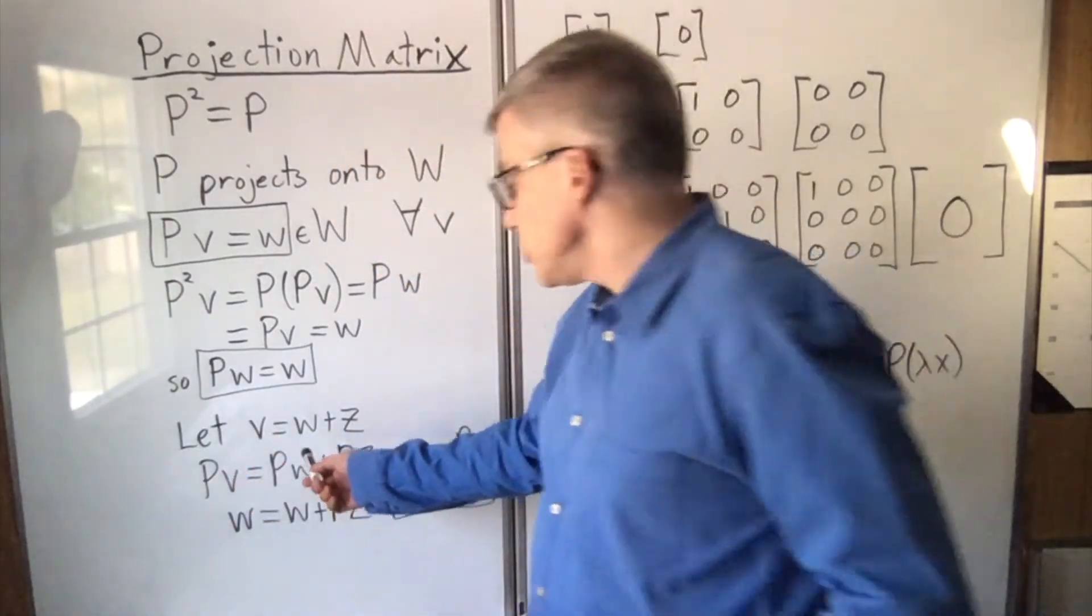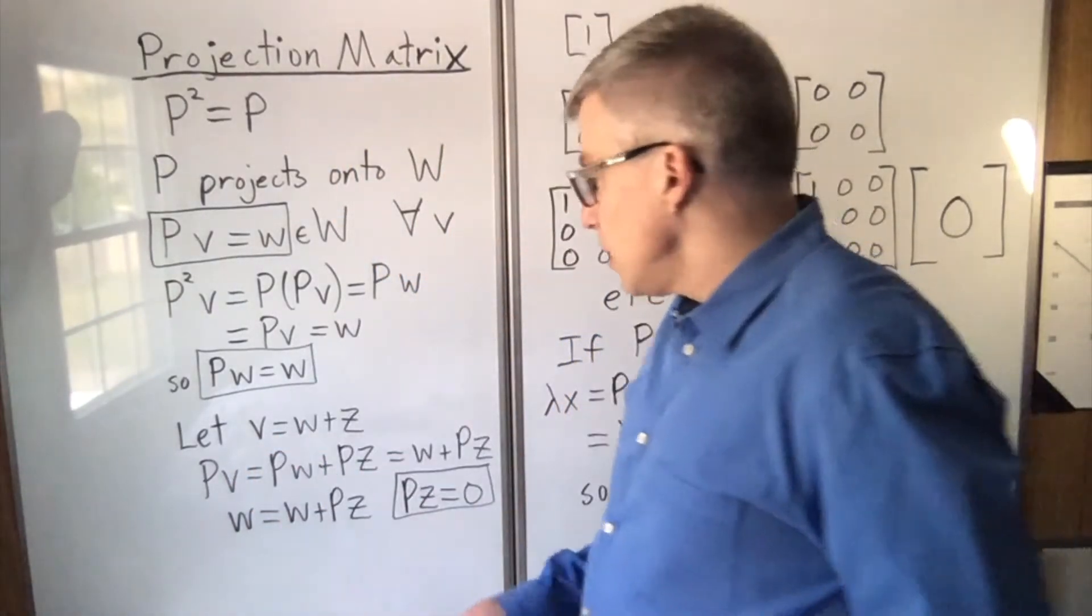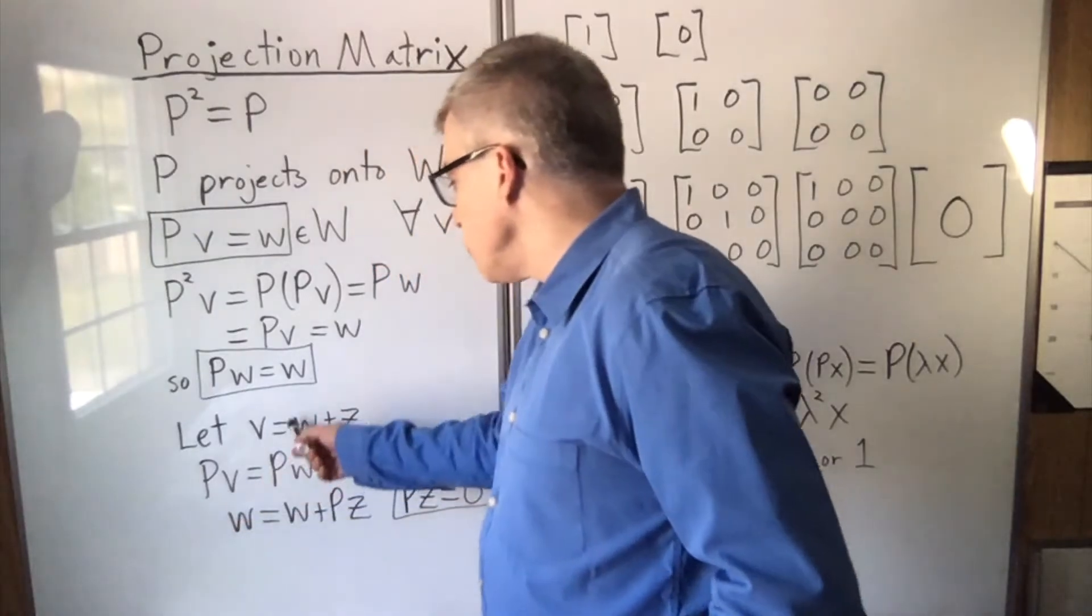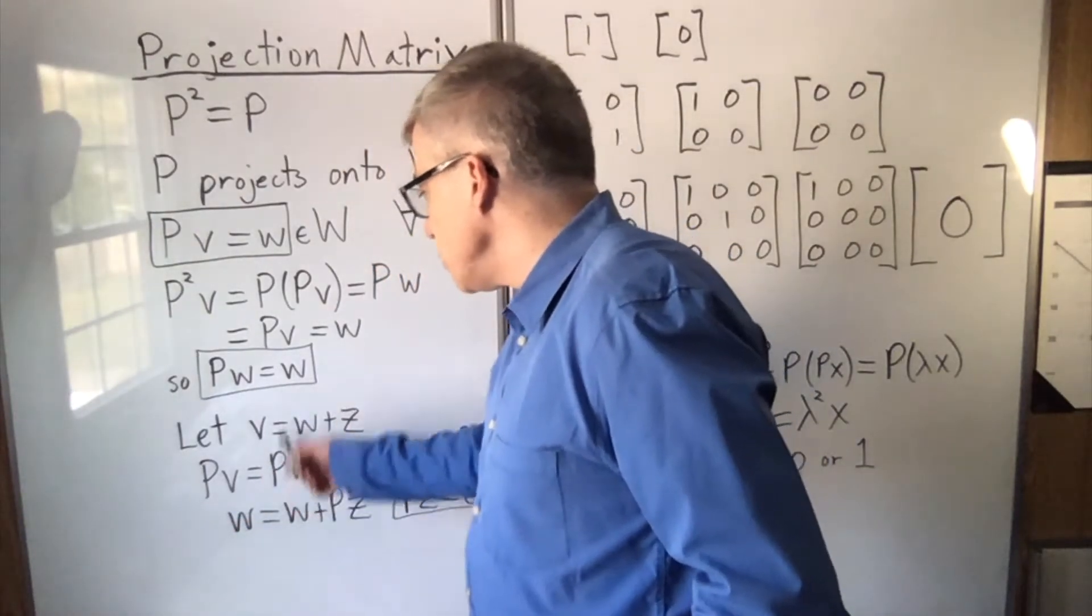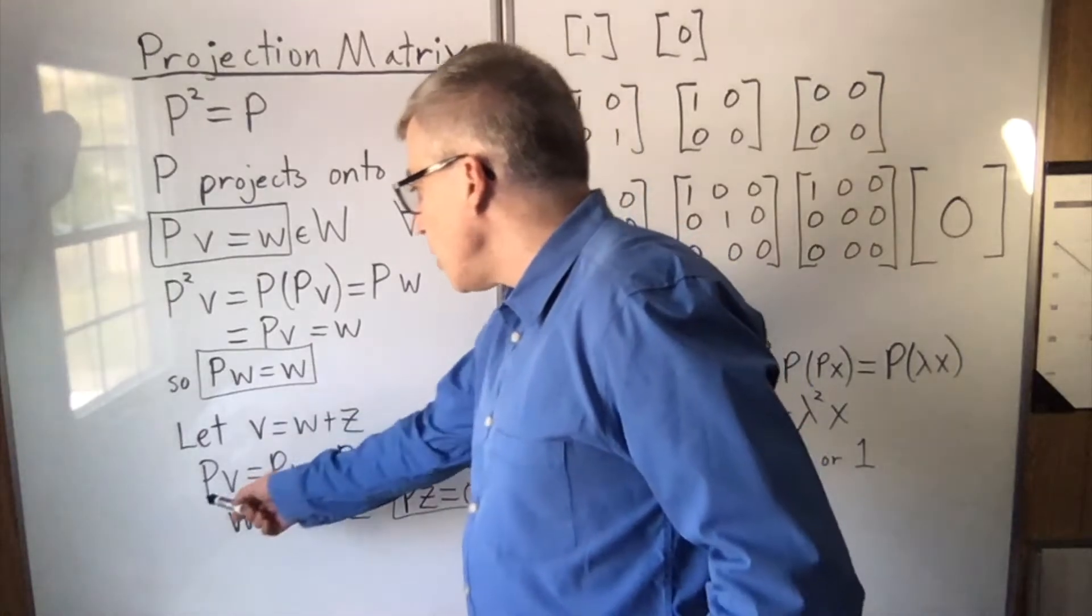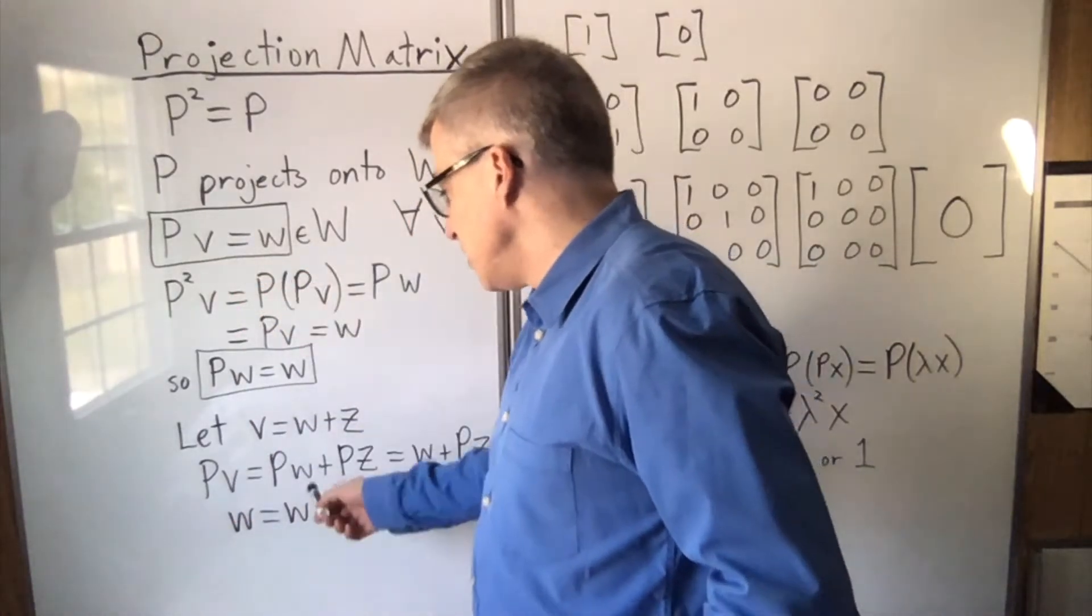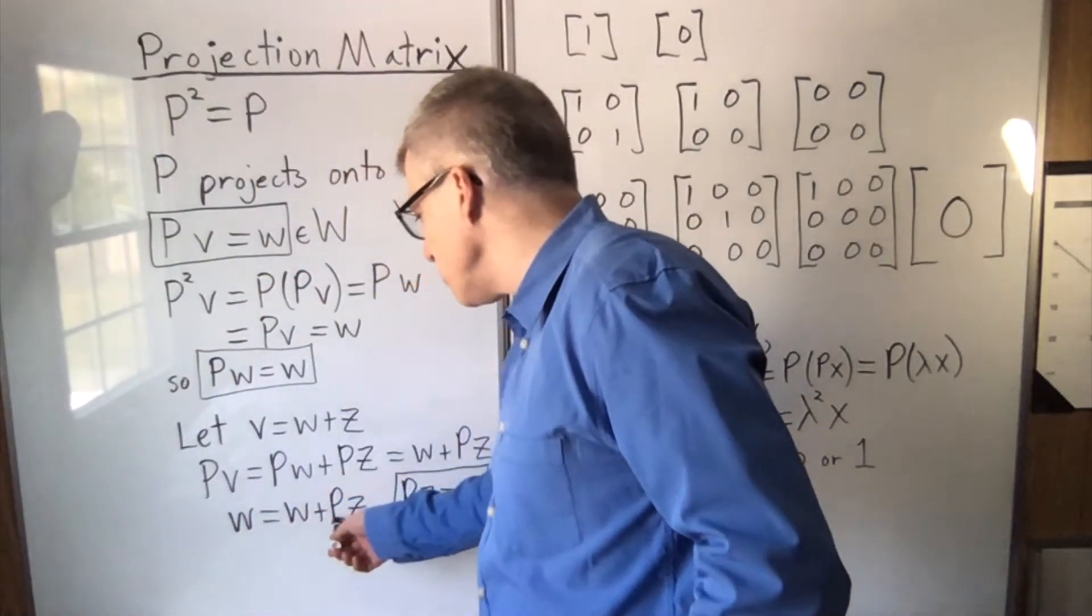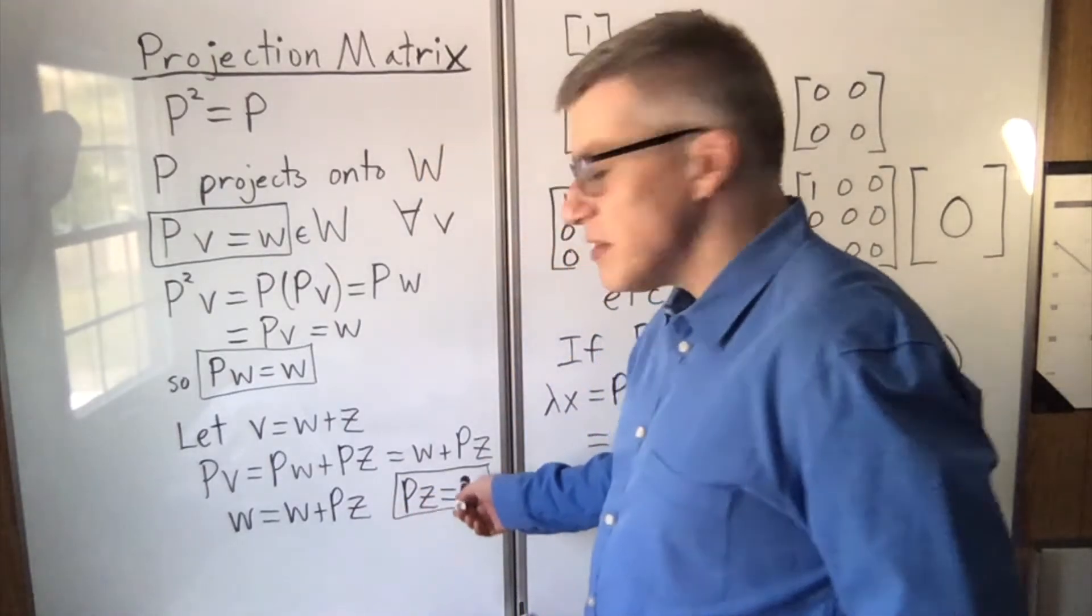Now, if you break v up into w plus z, then we know that pv will be pw plus pz, and pw we know is w. But we also know that pv is w. So we get w equals w plus pz, and pz, therefore, is 0.